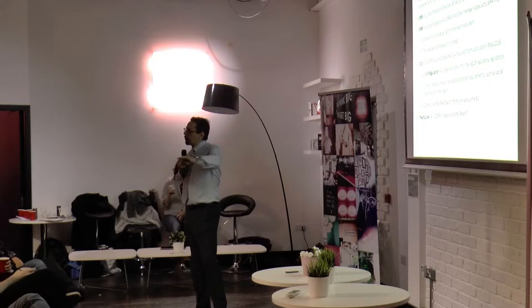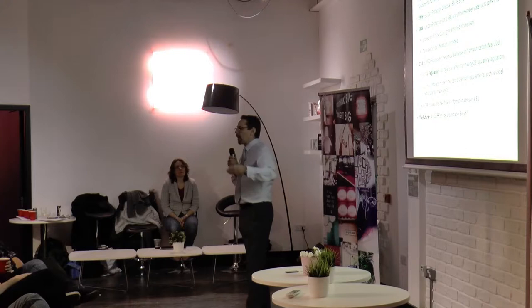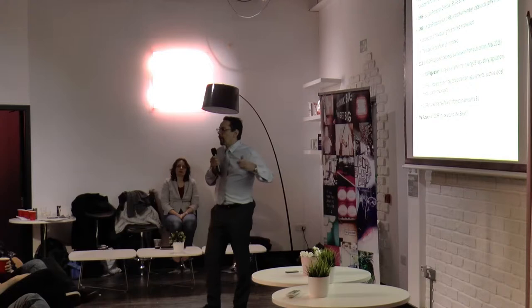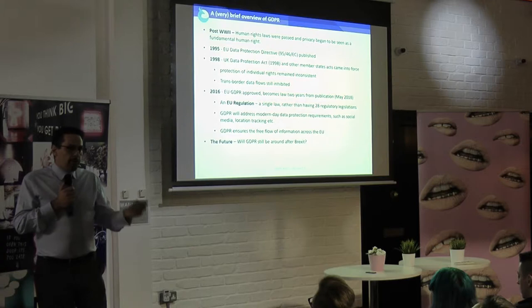But guess what? It failed — or it failed to a degree. Because what you ended up with was 28 different laws across Europe in all the different member states, all trying to tell everybody what to do with data protection. A really good example is that the UK could transmit data to Germany, but the Germans wouldn't transmit data back. And that gave us a bit of a problem. That's one of the reasons why GDPR came about.